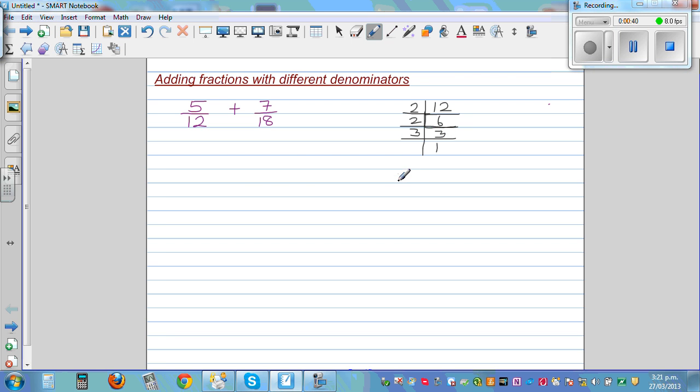So 12 written in prime factors is 2 times 2 times 3. So let's confirm: 2 times 2 is 4, 4 times 3 is 12.